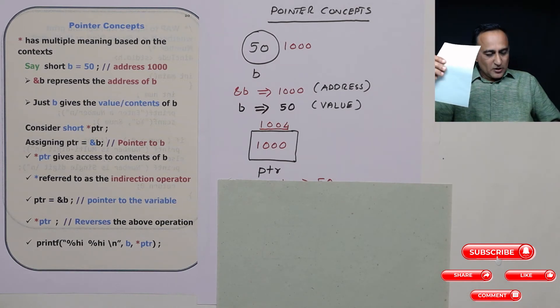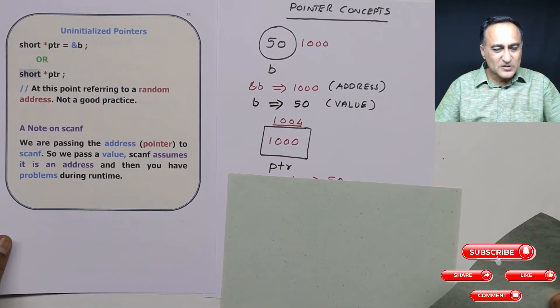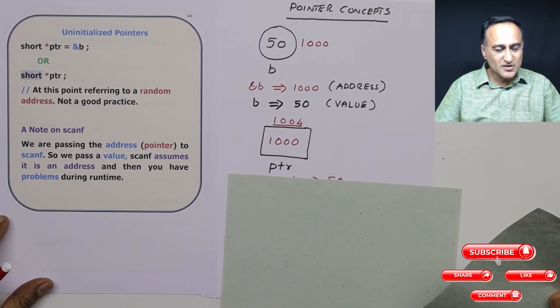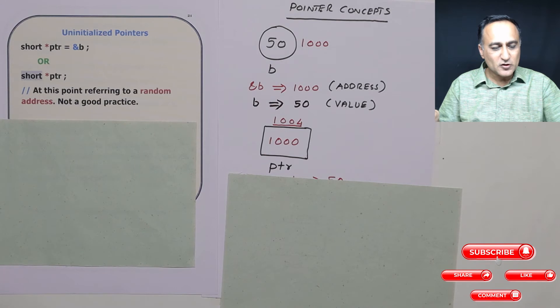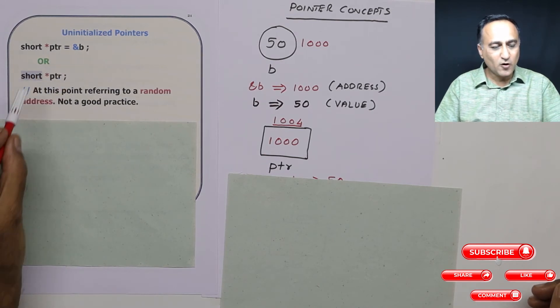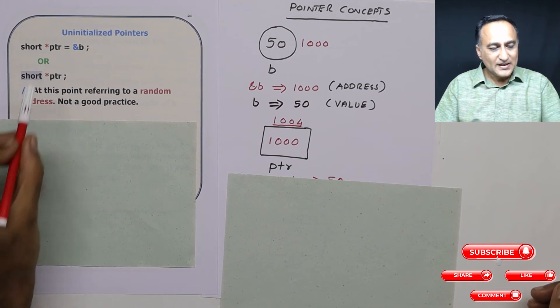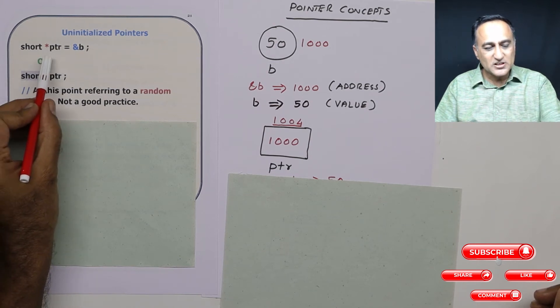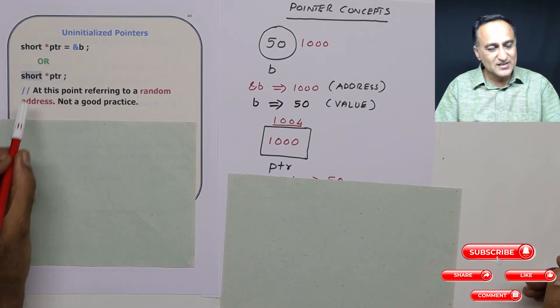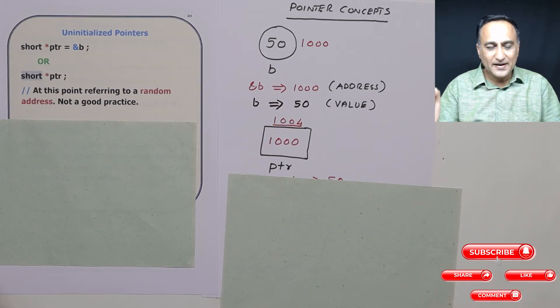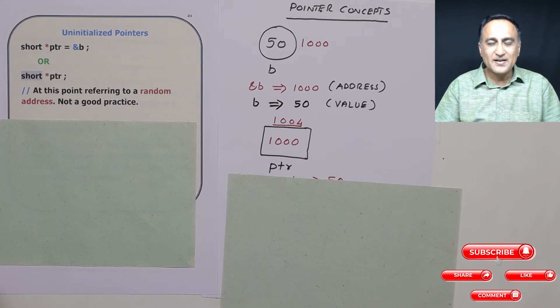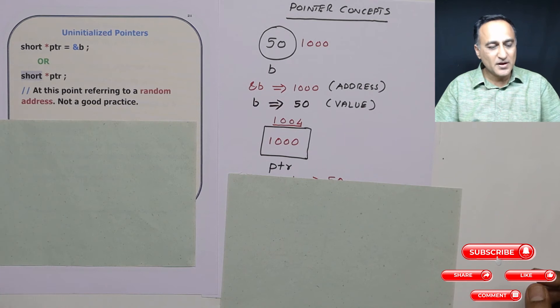Now you may have noticed at some places I have done this particular declaration: short star ptr is equal to address of b. This is a better way. I can say short star ptr is equal to null or give it some address. This is not a good idea to do because ptr being a variable is going to contain random addresses in it, and using random addresses is not a good idea because if you are not careful you may crash the system. A lot of compilers will give you a warning so very rarely you will be able to do anything crazy like this.